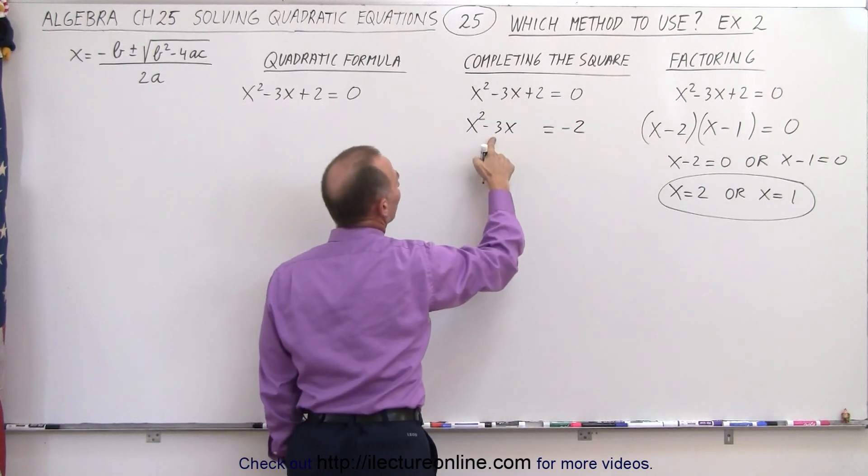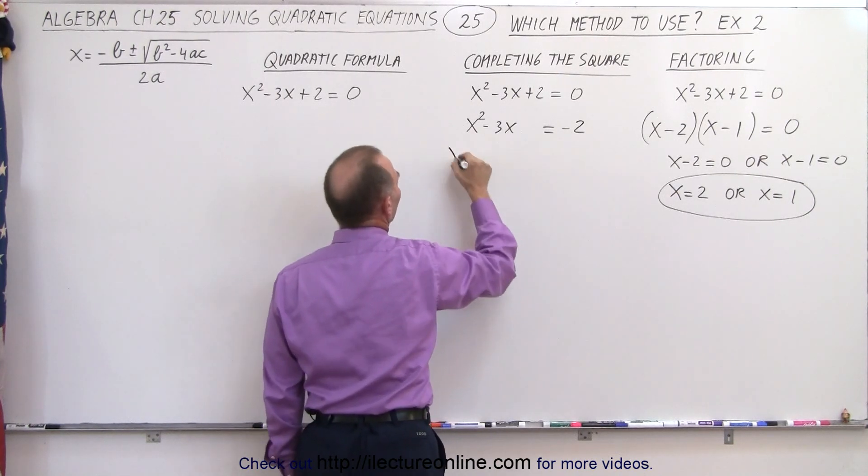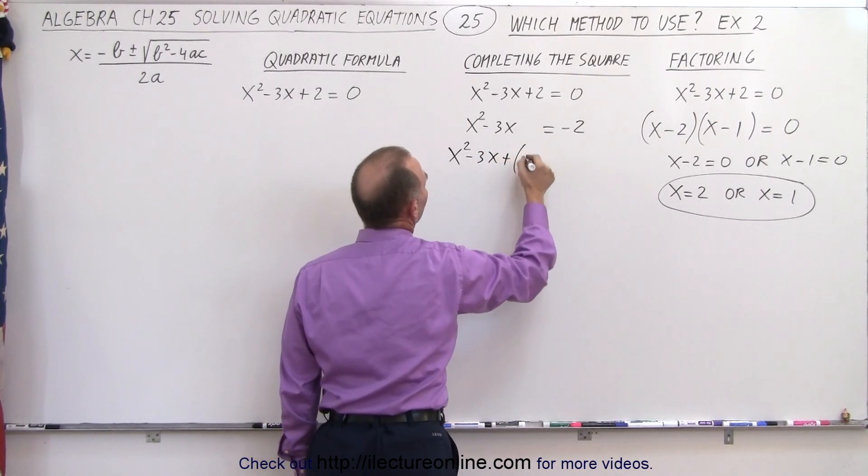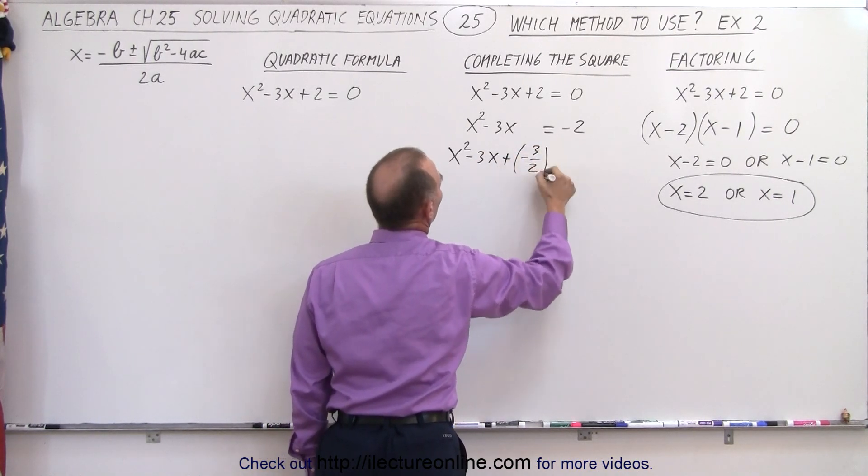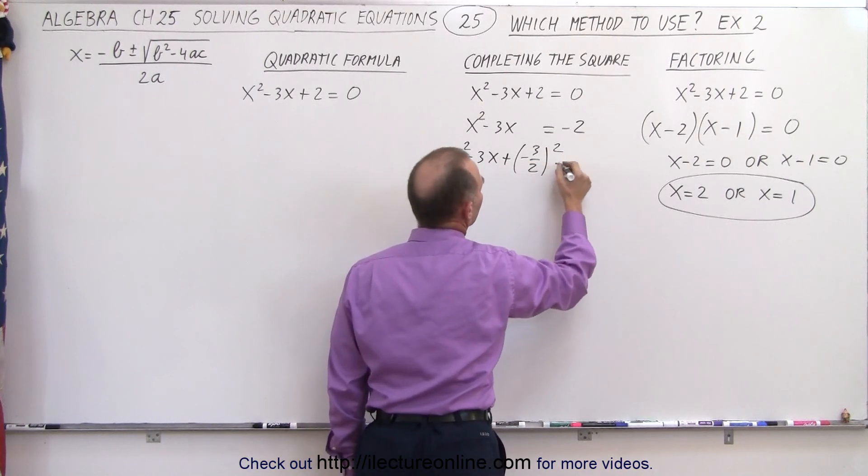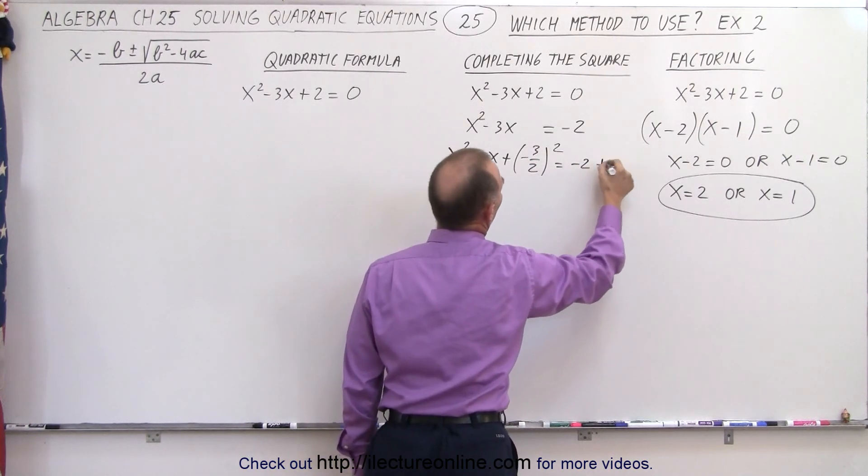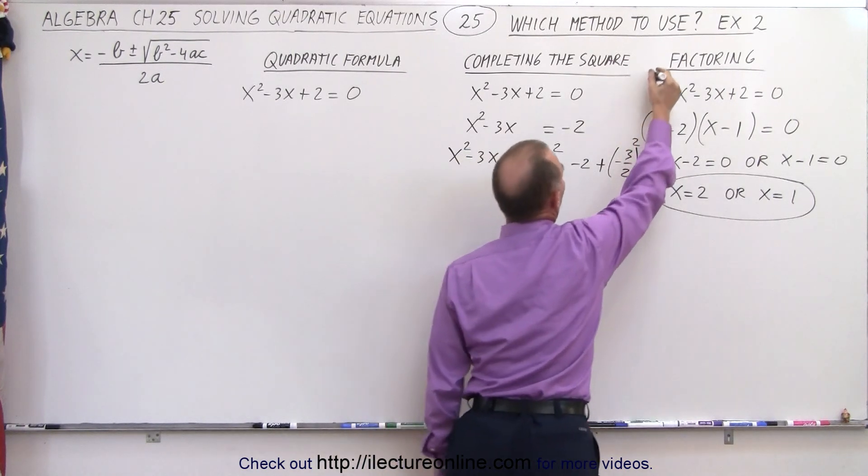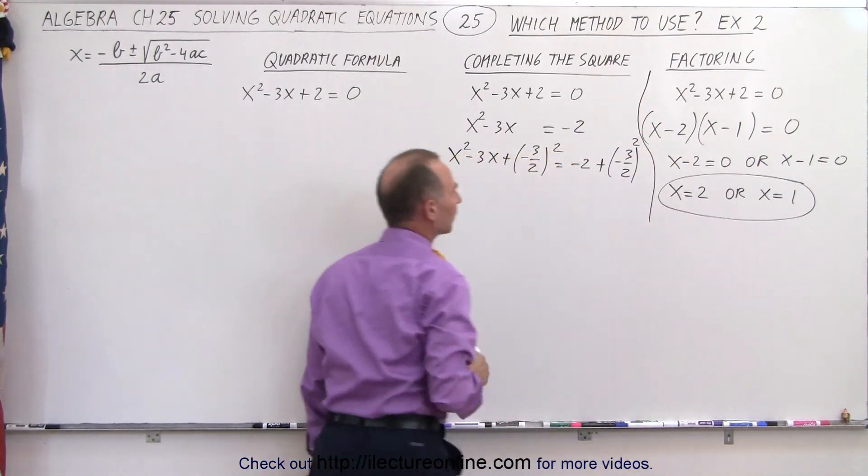Then I take half the middle term squared and add it to both sides. So we have X squared minus 3X plus minus 3 over 2 squared. That's half the middle term or the coefficient of the middle term squared equals minus 2 plus minus 3 over 2 squared. I've got to be careful not to get too confused here.